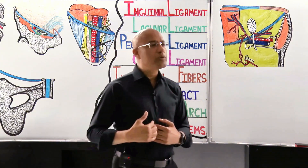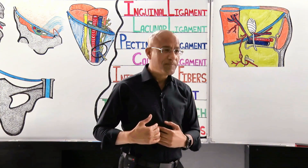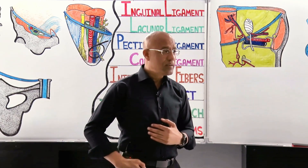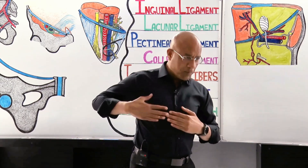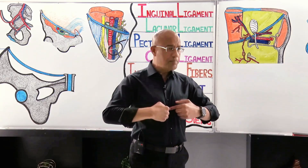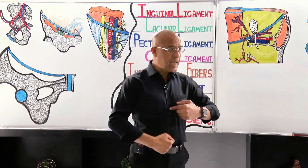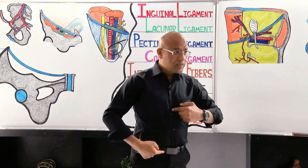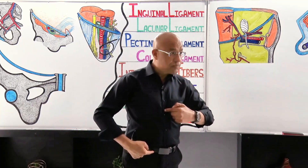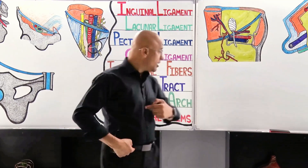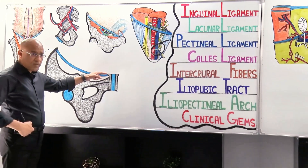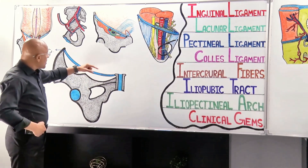From this aponeurosis, many things are derived, but right now we will concentrate on the inguinal ligament. The external oblique aponeurosis starts attaching from the xiphisternum, then linea alba, then pubic crest, pubic symphysis, then pubic crest again, and then pubic tubercle.